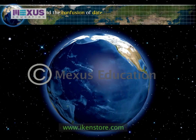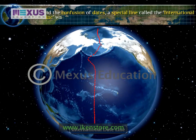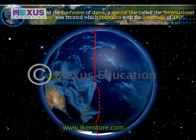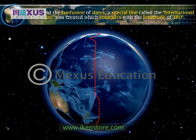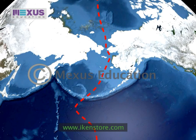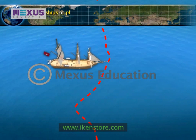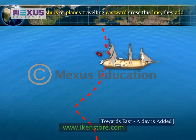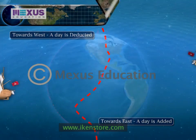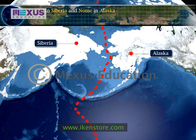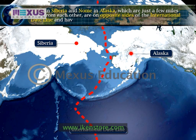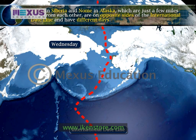To avoid confusion of dates, a special line called the International Date Line was created, which coincides with a longitude of 180 degrees. The International Date Line is not a straight line, and follows a zigzag course to pass over only sea or oceans. When ships or planes travelling eastward cross this line, they add a day, and when they are travelling westward, they deduct a day. Velen in Siberia and Nome in Alaska, which are just a few miles away from each other, are on opposite sides of the International Date Line and have different days. If it is Wednesday in Velen, it is Tuesday in Nome.